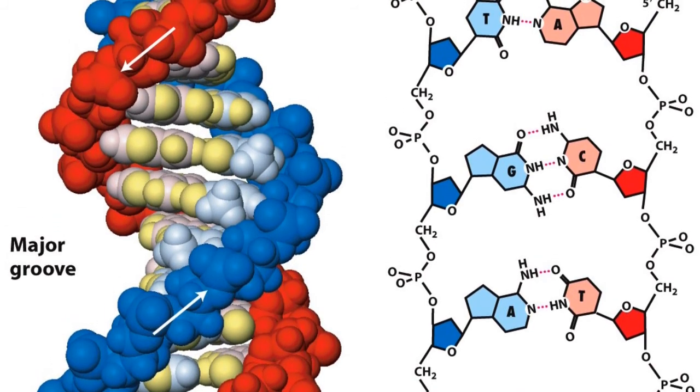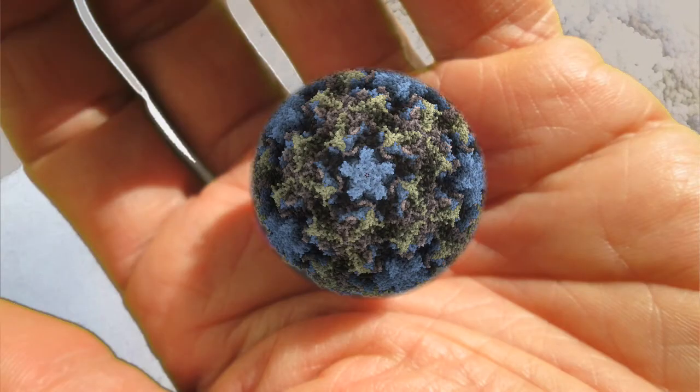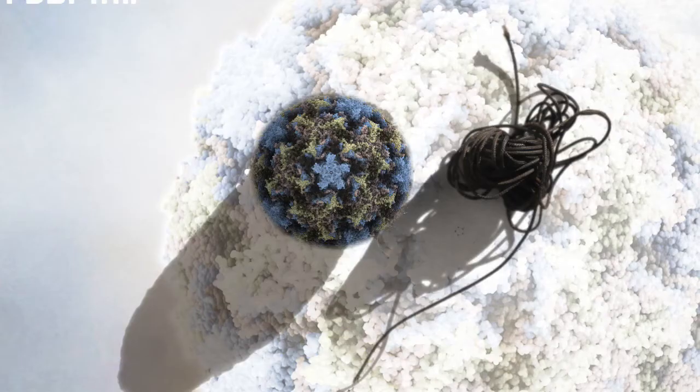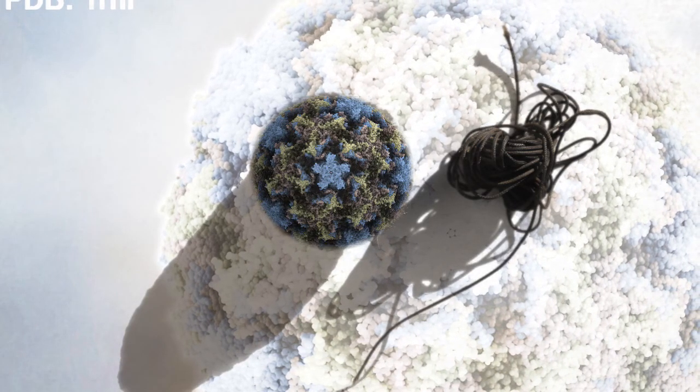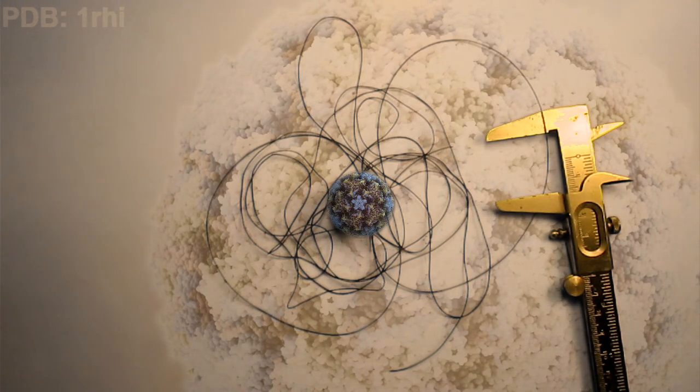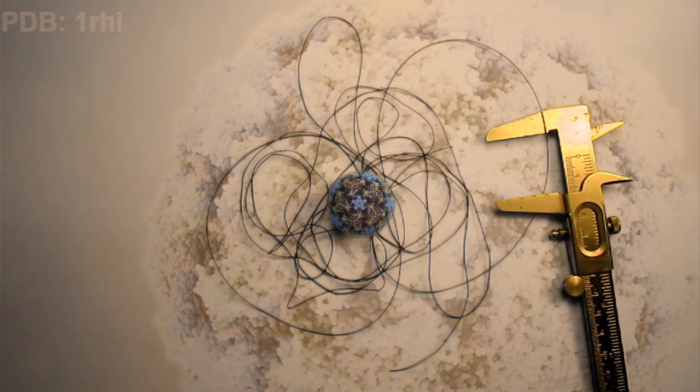To get a true sense of what's going on, let's enlarge the virus by one million times. Now, it's three centimeters across. Its RNA strand becomes a thin half zipper, two and a half meters, or eight feet, in length. That's a lot to keep untangled.